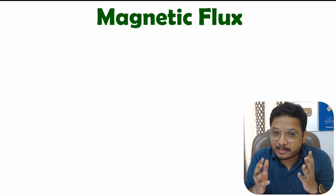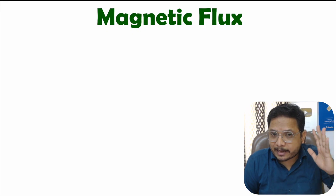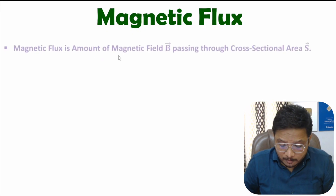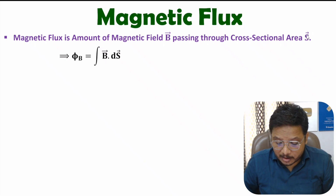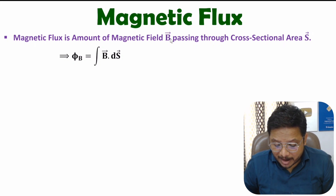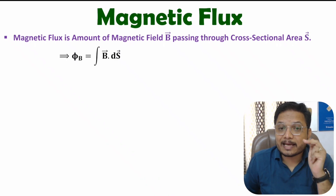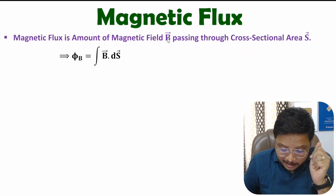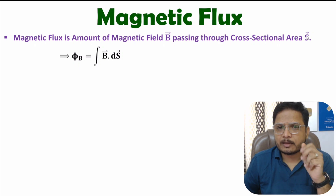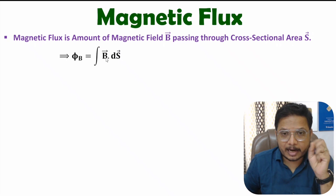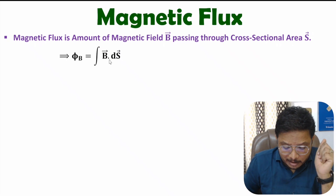First of all, one should know what is magnetic flux. Magnetic flux is the amount of magnetic field passing through a cross-sectional area. If you have magnetic field B and cross-sectional area S, then magnetic flux is the dot multiplication of magnetic field and surface area — that is B·S. In general, one can calculate magnetic flux as per the surface integration of the magnetic field, and always remember this will be dot multiplication.